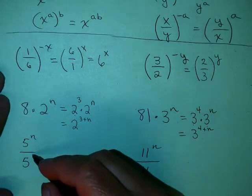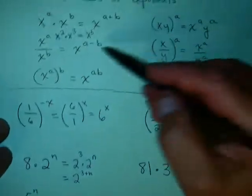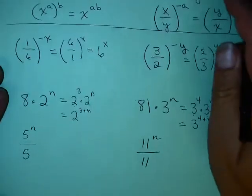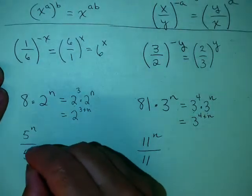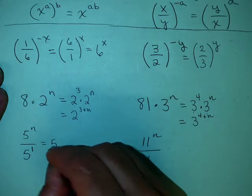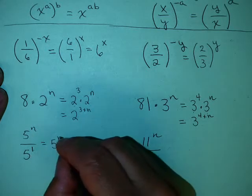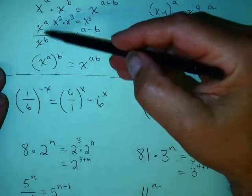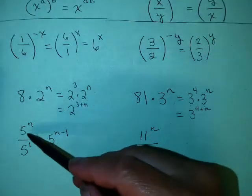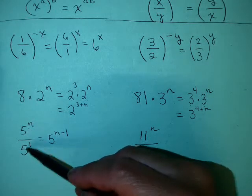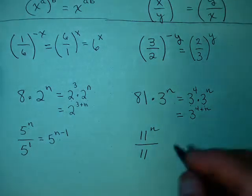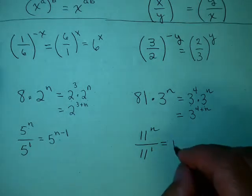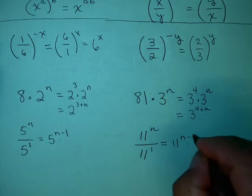For 5 to the n over 5, we use the rule x to the a over x to the b equals x to the a minus b. Remember, 5 by itself is just 5 to the 1st, so this is 5 to the n minus 1. Since the base is the same, you subtract the exponents. Similarly, 11 to the n over 11 — this is 11 to the 1st — so this would be 11 to the n minus 1.